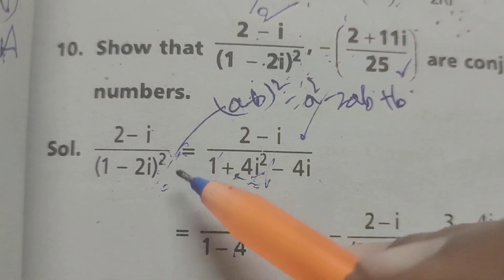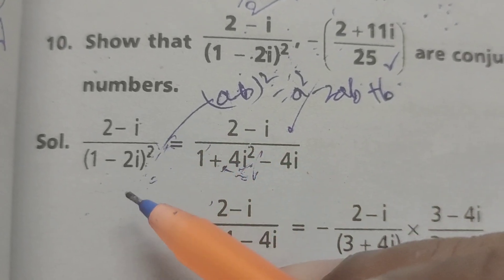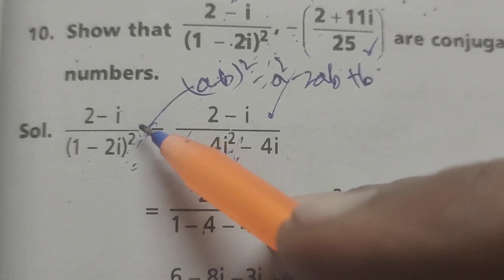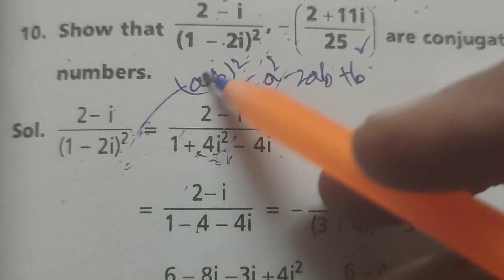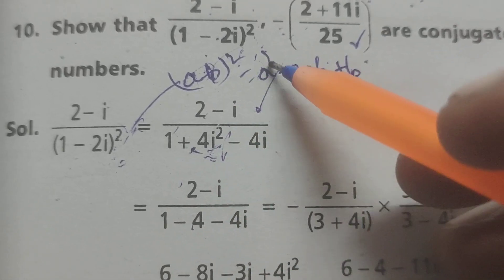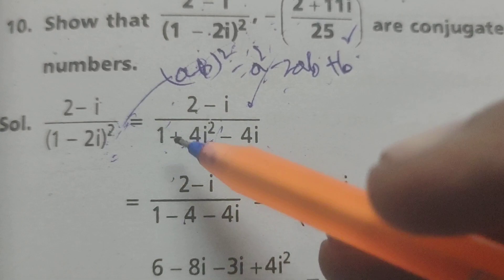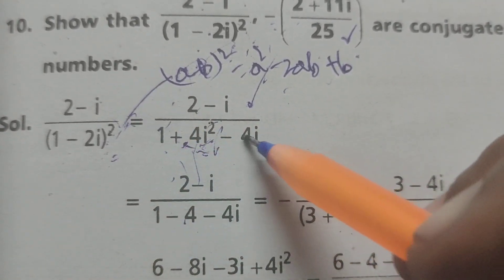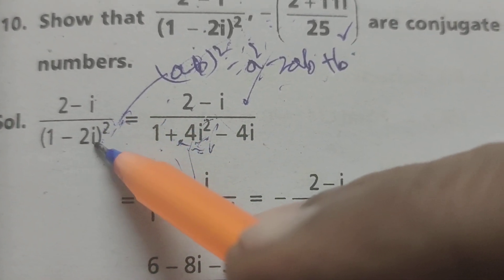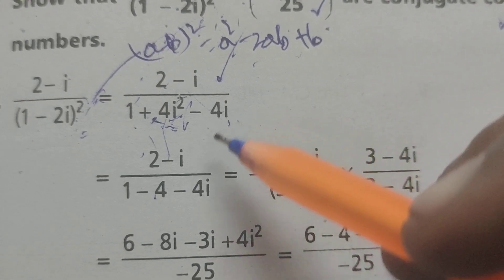First of all, write the first complex number: (2-i)/(1-2i)². Expand (a-b)² using the formula a² - 2ab + b². We get 1² + (2i)² - 2(1)(2i), which is 1 + 4i² - 4i.